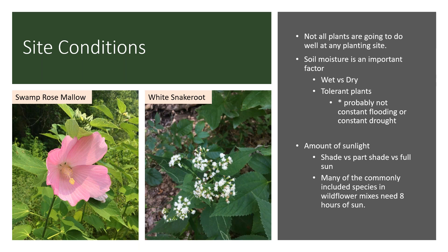When planning your pollinator planting, take a good close look at where you're planning to plant it — not all plants will do well at any planting site. Soil moisture is a crucial factor. If an area gets really wet with standing water, some plants will do well and others won't. Things like swamp rose mallow like to have its feet wet — it doesn't mind standing water and moist soils, but would not do well in a dry area. There are also plenty of tolerant plants that can handle both wet and dry conditions.